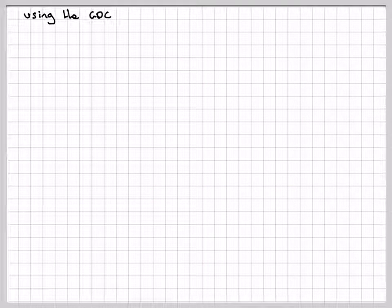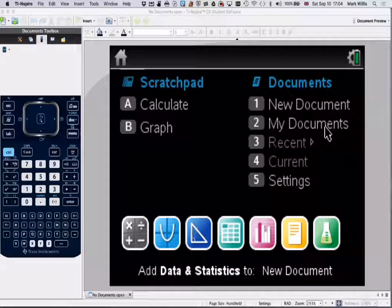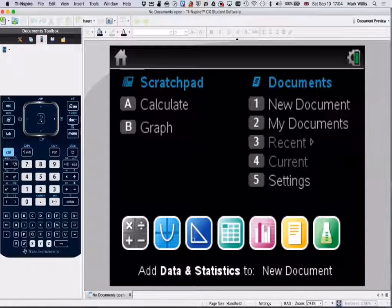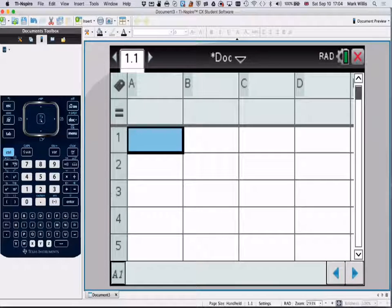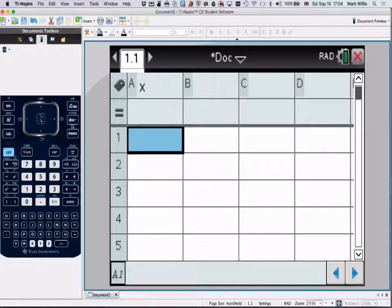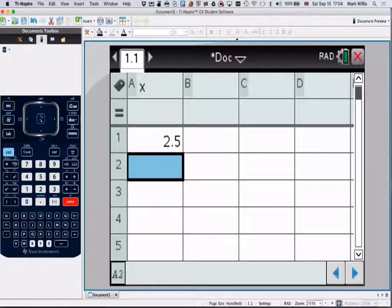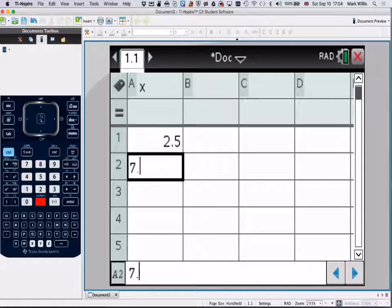So, if we now use the GDC to get the same results. When you turn on the GDC, you get this. We're going to go to spreadsheet mode, which is this one here. In column A, we're going to call that X. So, you can actually label the column X. And we're going to put 2.5, enter, and then the next one will be 7.5. What we're putting in here is the midpoint.